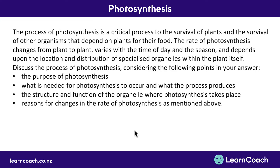Now let's look at an exam question. The process of photosynthesis is critical to the survival of plants and other organisms that depend on plants for food and oxygen. The rate of photosynthesis varies from plant to plant, with the time of day, and with the season, and depends on the location and distribution of specialized organelles — chloroplasts — within the plant. We're going to discuss photosynthesis considering: its purpose, what's needed for it to occur, the structure and function of the organelle where it takes place, and reasons for change in the rate of photosynthesis.